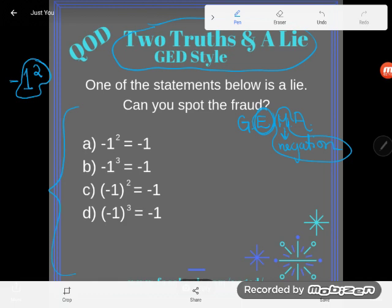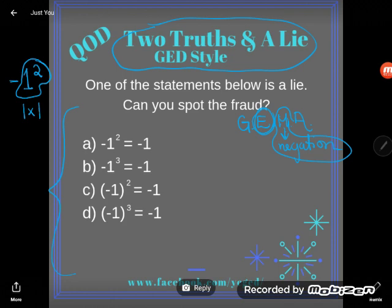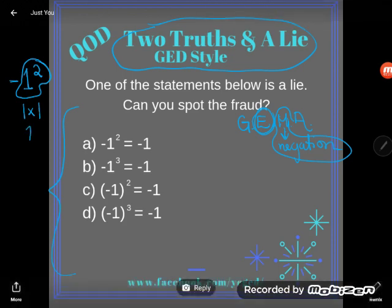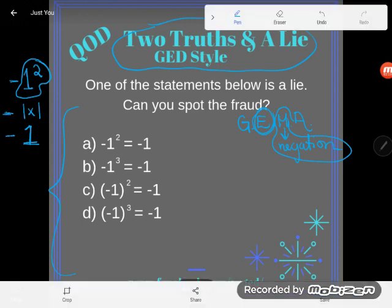I'm going to ignore the negation for now and do one to the second power. Well what does one to the second power mean? Careful, it doesn't mean one times two, it means one times itself. One times one is just one. And now that I've dealt with the exponent, now I'll just drop the negation. I will negate it after I raise it to a power, and so my answer here does check out to be negative one.